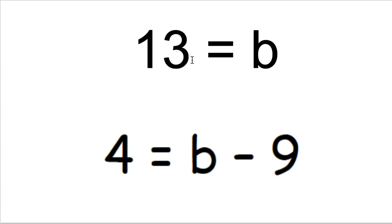I've identified what b is worth: 13. If I put it into my original equation, I would have 13 minus 9, which is 4, and 4 equals 4. So that's correct.